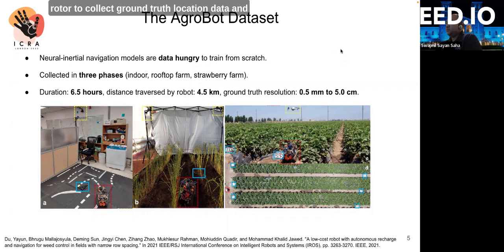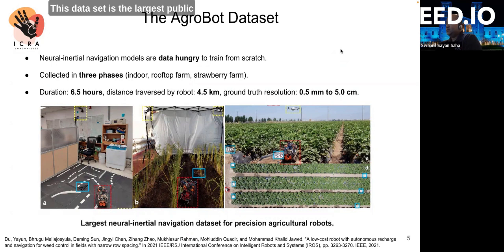In the last phase, we use a quadrotor to collect ground-truth location data and checkerboard patterns as reference markers. This dataset is the largest public neural inertial navigation dataset for precision agriculture robots.